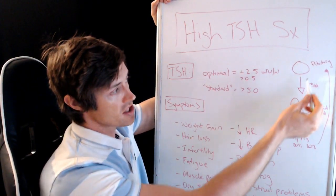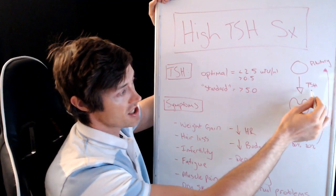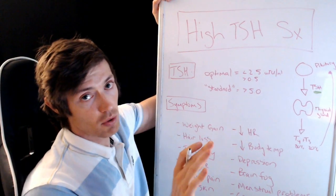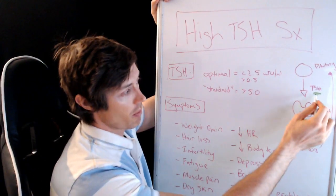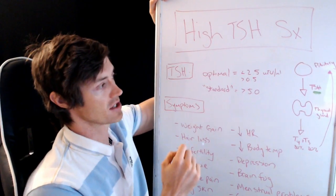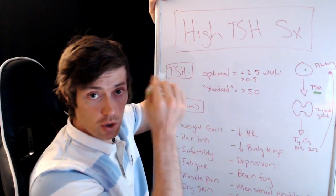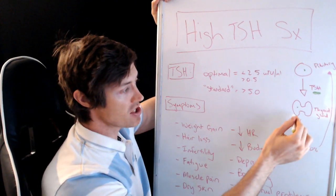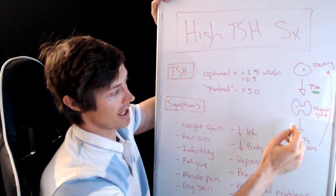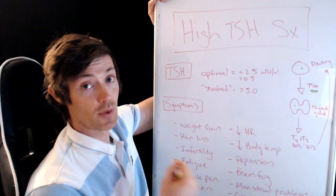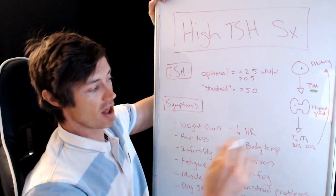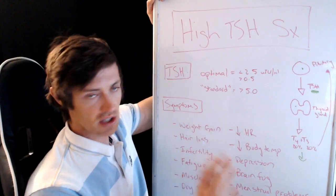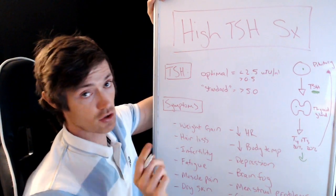The pituitary, which is in your brain, secretes the hormone TSH. It's really the bell of the ball today — it's not the most important thyroid test, but it's what we're spending our time on. TSH is produced by the pituitary gland and it acts on the thyroid, telling your thyroid gland to pump out T4 and T3, which are thyroid hormones. There's a little more complexity with conversion and cellular activation, but let's focus on the TSH.